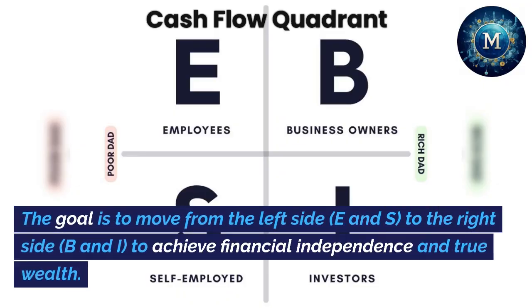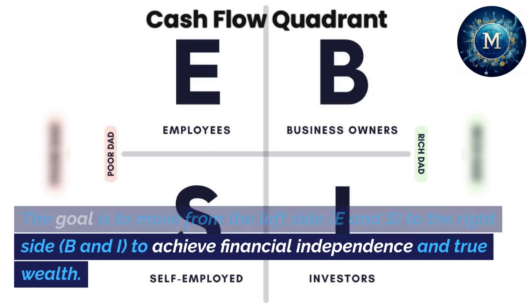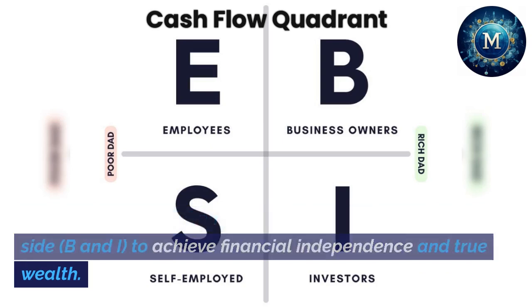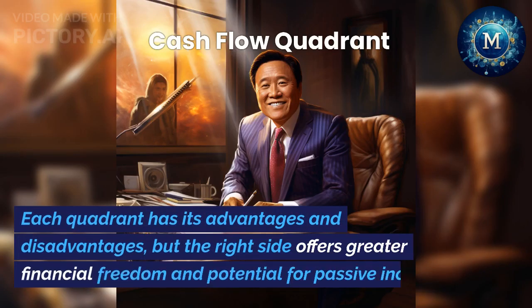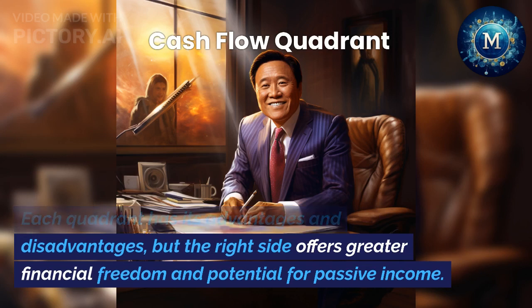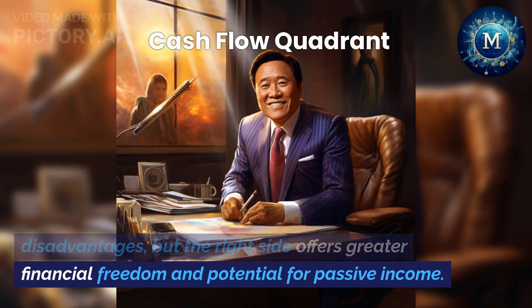The goal is to move from the left side — E and S — to the right side — B and I — to achieve financial independence and true wealth. Each quadrant has its advantages and disadvantages, but the right side offers greater financial freedom and potential for passive income.